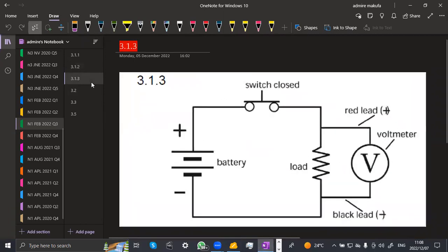Let's check our voltmeter, that's 3.1.3. We've got our voltmeter connected in parallel to the load, the switch being closed, the battery. What is important is for you to show the voltmeter, the load, the switch, and the battery. These are the most important things. You can write the red lead, the black lead, but what is important is the voltmeter, the load, the battery, and the switch.